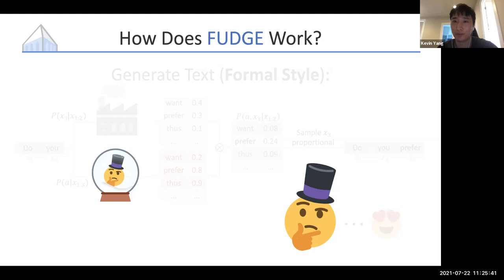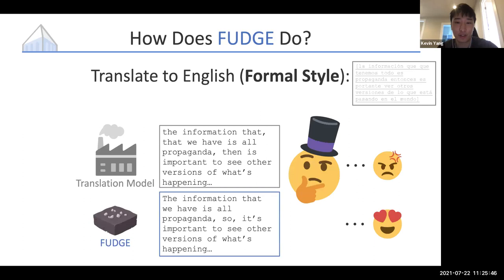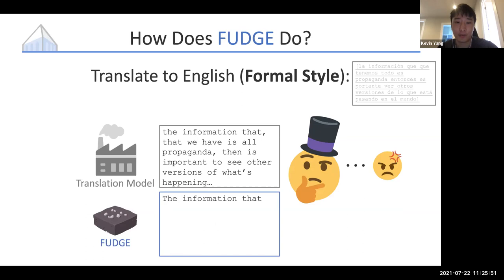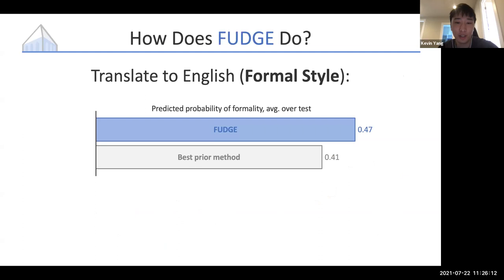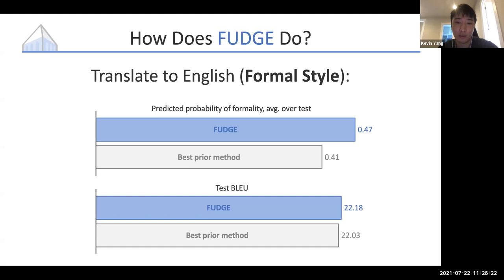Let's see FUDGE in action on the Spanish-English formal translation example. We can backtrack FUDGE to a specific step where the base model translated a repeated Spanish word verbatim. By having our classifier judge the formality of possible continuations, FUDGE can modify its continuation so that it doesn't repeat those words. The end result preserves the meaning while also being more formal. In our experiments, a classifier trained on a held-out formality dataset judges FUDGE's outputs to be significantly more formal than those of the best prior method, while FUDGE is also able to preserve content as measured by BLEU against clean reference translations.